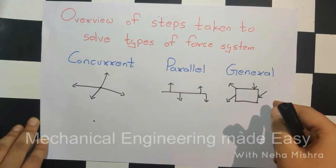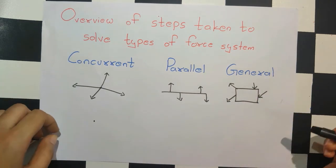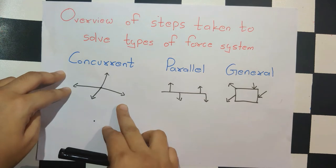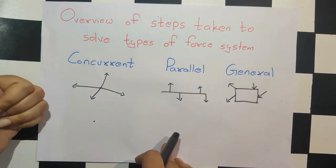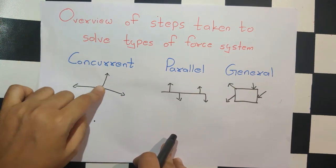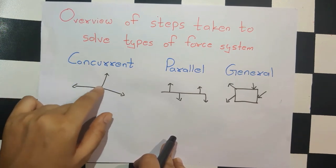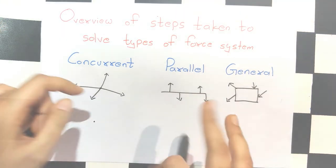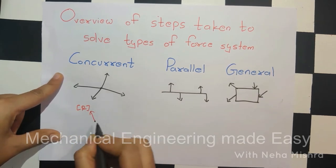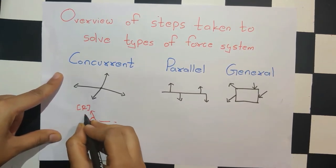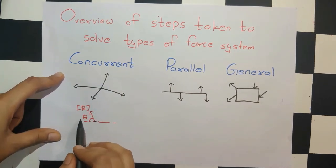What was important was the placement of the resultant — where exactly that resultant will lie. For concurrent type of forces, all forces act at a single point, so the resultant will also act at that same point. But we need to find at what angle it will be applied, so we find both the magnitude R and the angle θ.